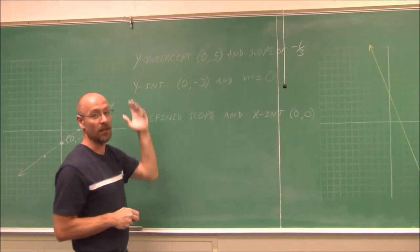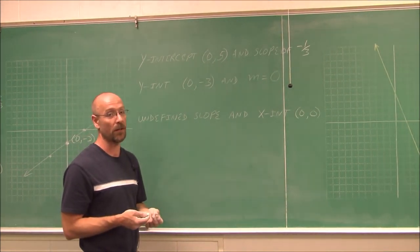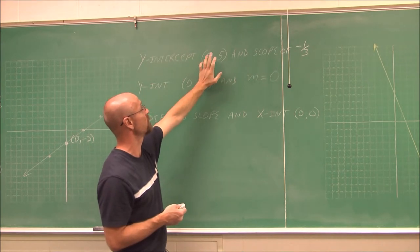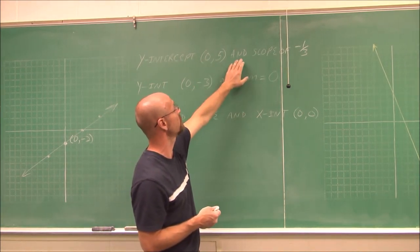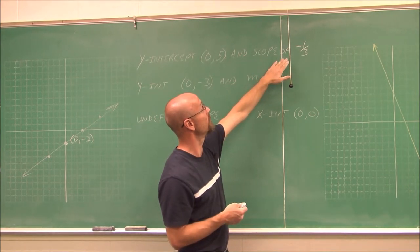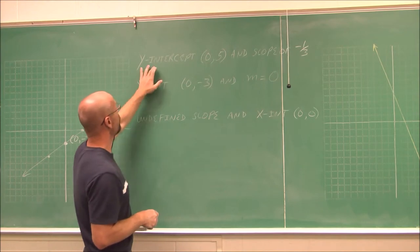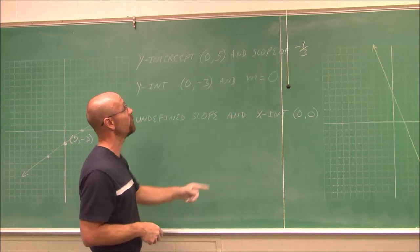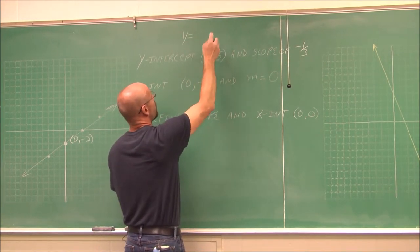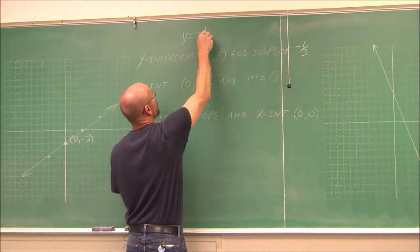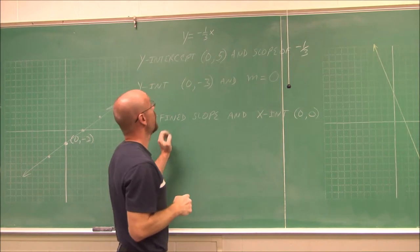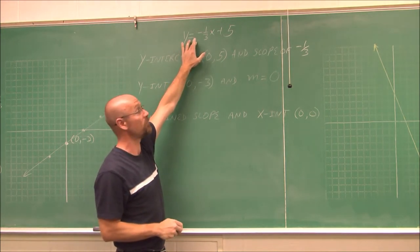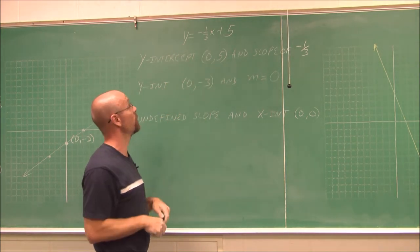What if we're not given an equation but asked to find one? Here we're told the y-intercept is (0, 5) and the slope is negative 1 third. We have all the information we need for slope-intercept form: y equals mx plus b, where m is negative 1 third as the coefficient of x, and b is positive 5. So the equation is y equals negative 1 third x plus 5.